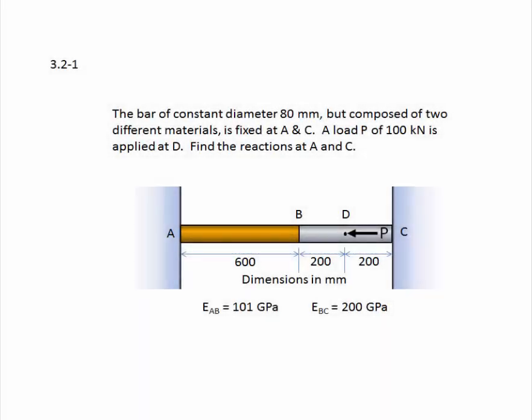Problem 3.2-1. The problem reads: the bar of constant diameter 80 millimeters, but composed of two different materials, is fixed at A and C. A load P of 100 kilonewtons is applied at D. Find the support reactions at A and C.